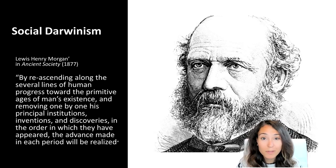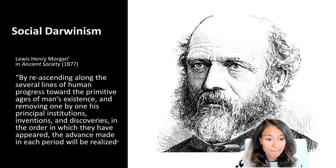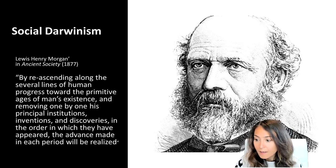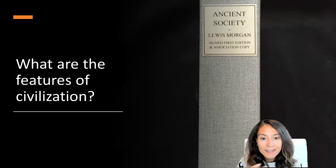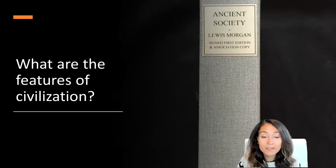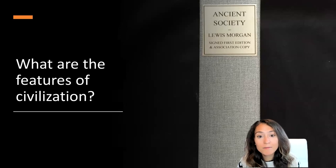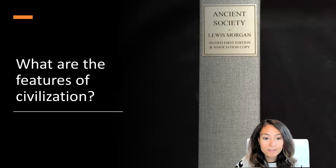Lewis Henry Morgan played a critical role in developing social Darwinist ideas through a book called Ancient Societies. Before talking about it, I'd like you all to think about what the defining features of civilization are — an important question that lies at the heart of Morgan's work, and something we'll come back to later in the term as we talk about the rise of state civilizations.